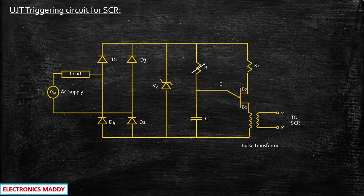UJT triggering circuit for SCR means we will be using a unijunction transistor for triggering purpose in order to turn on the SCR. So let us first look at the circuit diagram and try to analyze what is actually happening, and how the pulse is given to the SCR to turn it on. From there, the remaining analysis will be simple and straightforward.